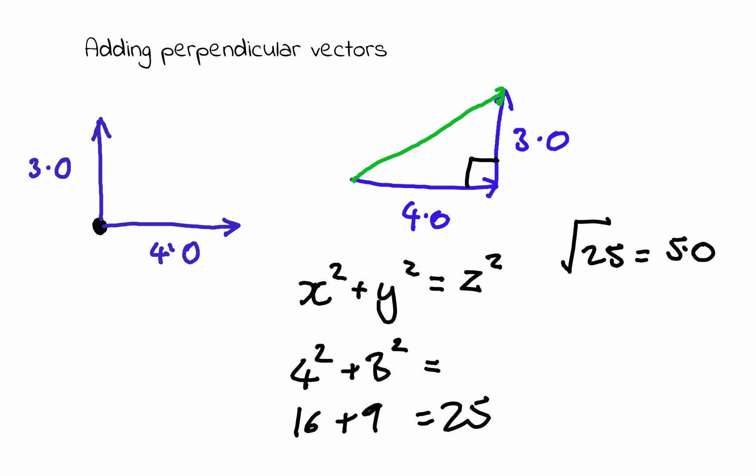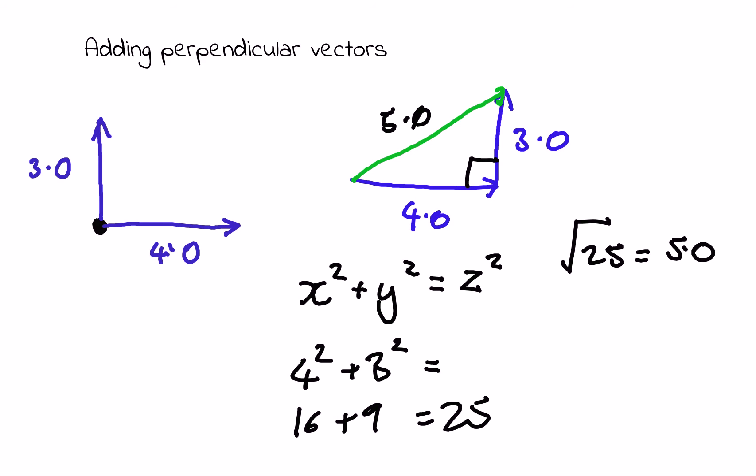Now I've found the magnitude of my vector, which is 5.0. The second piece of information I need to know about the vector is of course the angle. In this case I'm going to work out the angle from the horizontal. My 3 is opposite the angle I'm interested in and the 4 is adjacent to it, so from my trigonometry I know that tan theta equals the opposite over the adjacent.